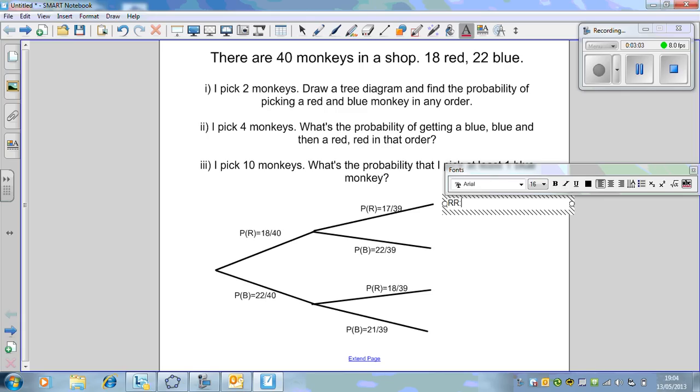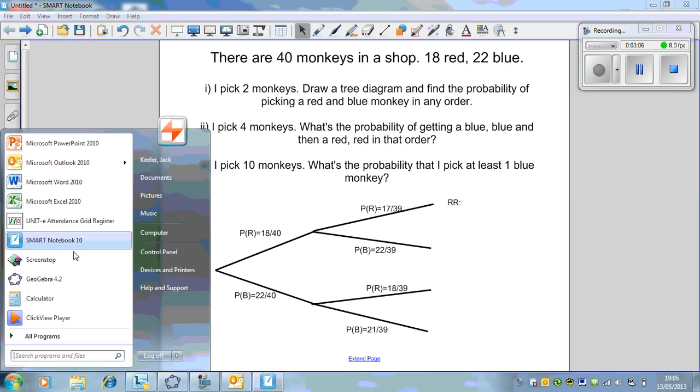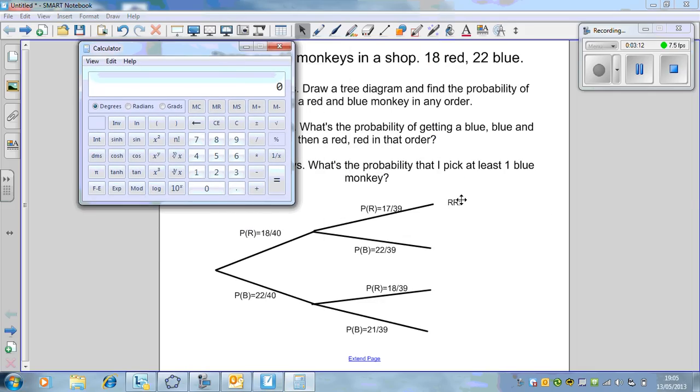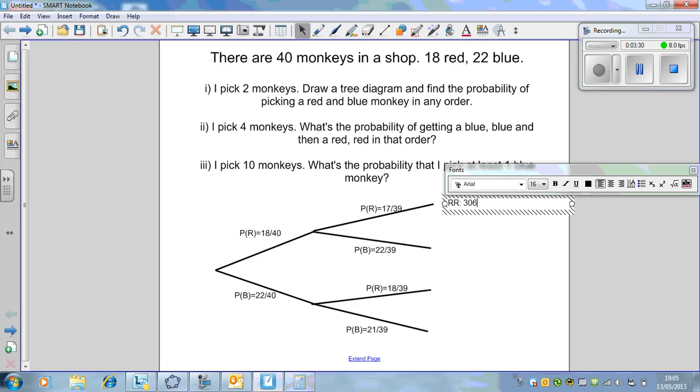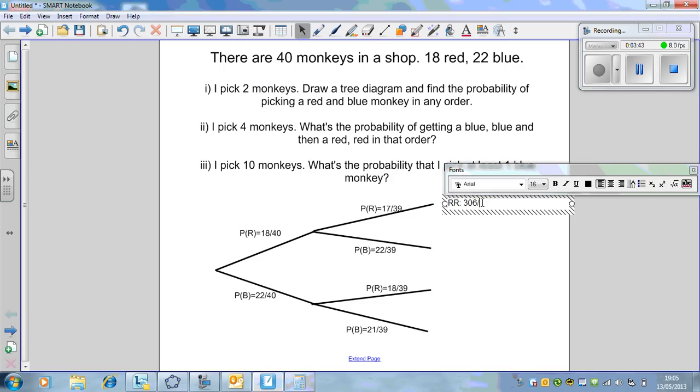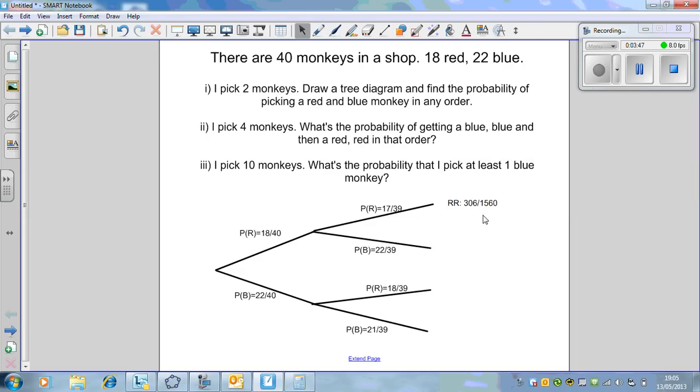We've taken a red out, so there'll be 17 reds out of 39. For blue, there's still 22 in there because we've only picked a red out in this universe, out of 39. In this universe we've picked out a blue, so the probability of picking a red is 18 out of 39.